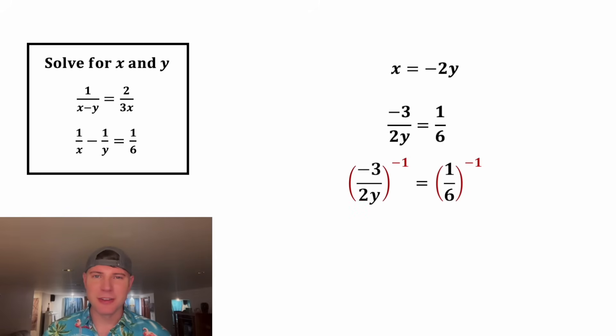From here, we can do both sides to the negative 1 exponent, or in other words, take the reciprocal of both sides. The negative 3 over 2y becomes 2y over negative 3, and the 1 over 6 changes to 6 over 1. Now we can get rid of the fractions by multiplying both sides by negative 3.